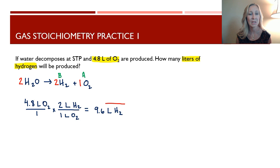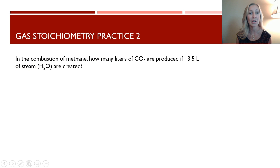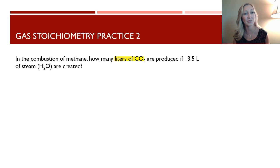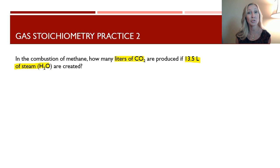As you can see, these are simple problems in which you're just comparing two volumes of a gas in a chemical reaction when the conditions do not change. Now here we have a combustion reaction of methane: how many liters of carbon dioxide are produced if 13.5 liters of steam are also created? We have two volumes of gases. This doesn't take place at STP, but since nothing indicates the conditions between the two gases are different, we assume they're the same.